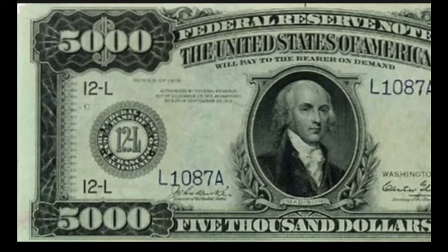Fun fact twelve: paper money is not made from paper — it is 75 percent cotton and 25 percent linen. Fun fact thirteen: US bills are only printed in Washington DC and Fort Worth, Texas. Fun fact fourteen: coins are only minted in six facilities — Philadelphia, Denver, San Francisco, West Point New York, a depository in Fort Knox Kentucky, and the headquarters in Washington DC.